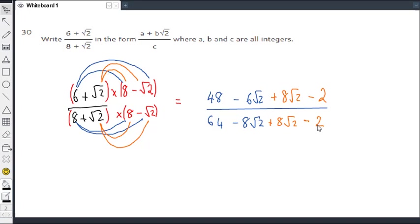OK, now if you look into the middle here, what do we see? We see a negative 8 root 2 and a plus 8 root 2. So clearly these two are cancelling each other out. So we can just put a line through that. So what does that leave us? On the bottom we have 64 minus 2, so that's going to be 62.